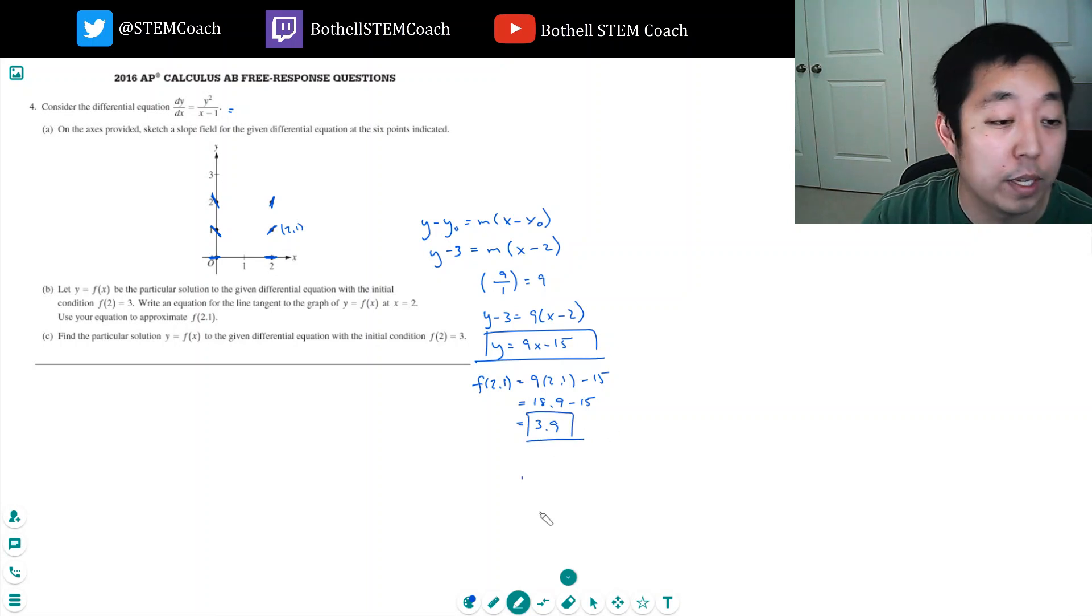Yeah, which makes sense, because if I move over 0.1, the slope is 9, I should go up 0.9. Find the particular solution to the given differential equation with that initial condition. So let's find the exact solution for this.